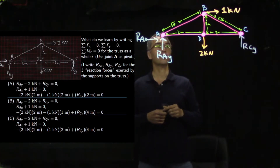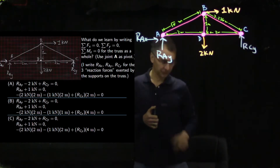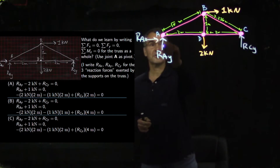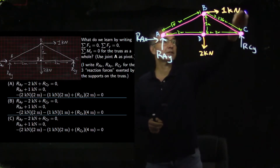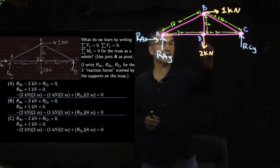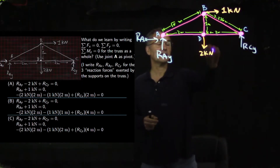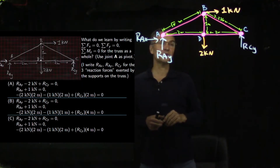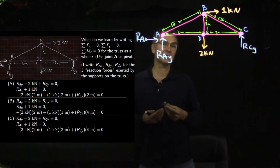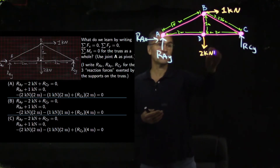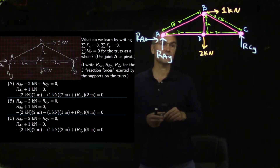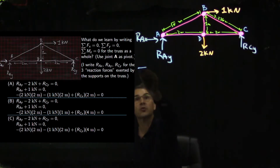Treating the truss as a whole, the external forces are R-A-X, R-A-Y, R-C-Y, a one kilonewton load at B to the right, and a two kilonewton load at D downward. We use kilonewtons — thousands of newtons — because a truss is supposed to hold things more on the ton scale. Starting with the torque equation: the sum of torques about A. This is for the truss as a whole, so we only care about external forces.